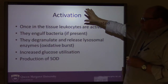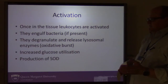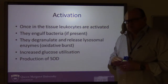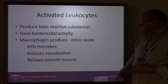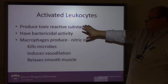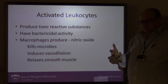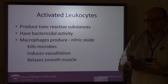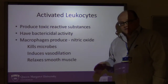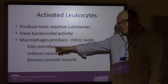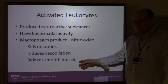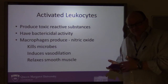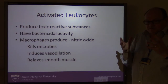The process of switching on the leukocytes is known as activation. Once activated, they're mopping up the bacteria, and you get the production of superoxide dismutase, which is an antioxidant. The activated leukocytes produce toxic substances with bactericidal activity, causing destruction of the bacteria. The macrophages also produce nitric oxide, which is antimicrobial, but nitric oxide is also a smooth muscle relaxant that induces vasodilatation, causing an influx of blood and reddening of the area — adding to the redness of the irritated area.